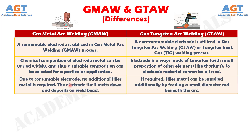Number three: in gas metal arc welding, due to the consumable electrode, no additional filler metal is required. The electrode itself melts down and deposits on the weld bead. Whereas in gas tungsten arc welding, if required, filler metal can be supplied additionally by feeding a small diameter rod beneath the arc.